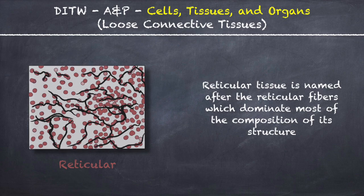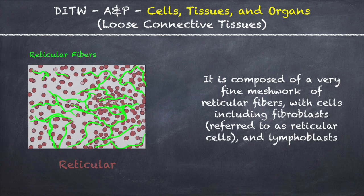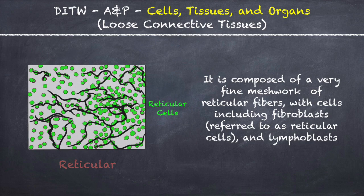Reticular tissue is named after the reticular fibers which dominate most of the composition of its structure. It is composed of a very fine meshwork of reticular fibers with cells including fibroblasts, referred to as reticular cells, and lymphoblasts.